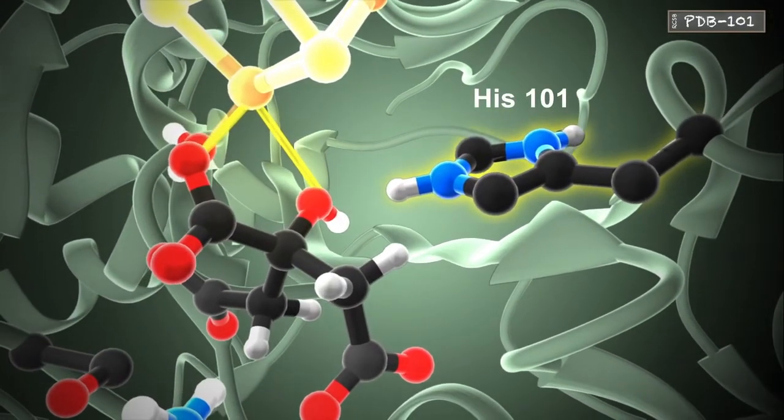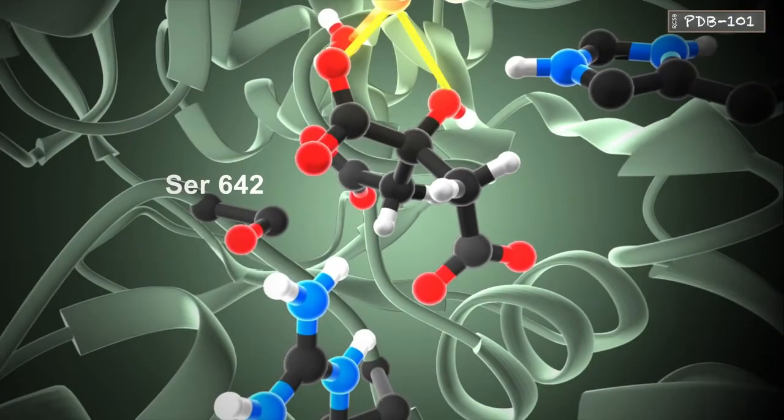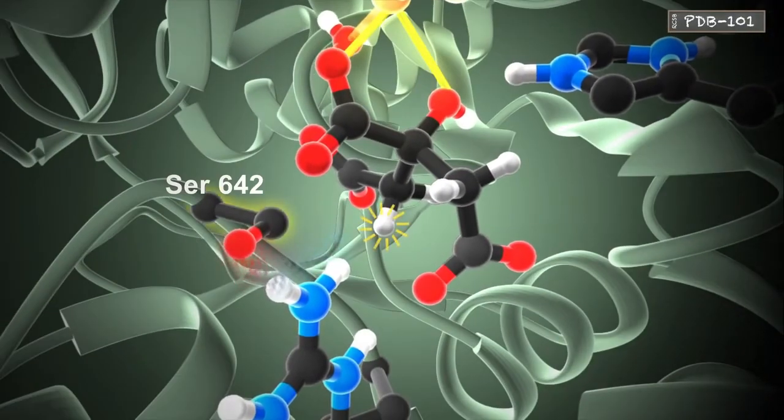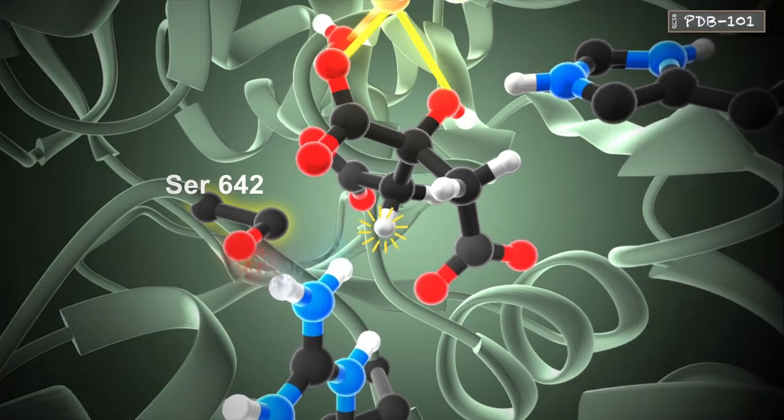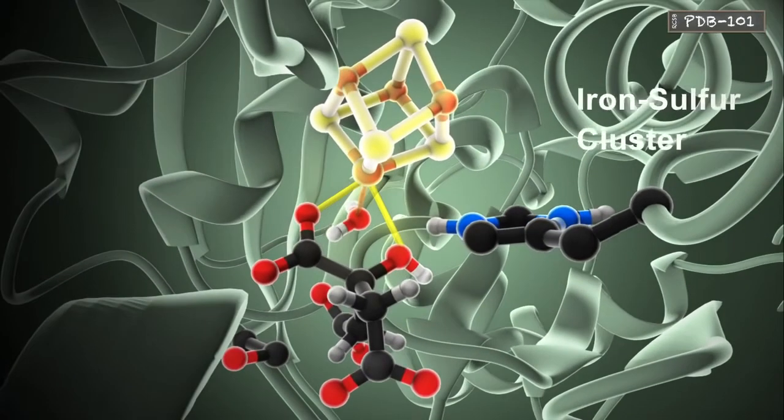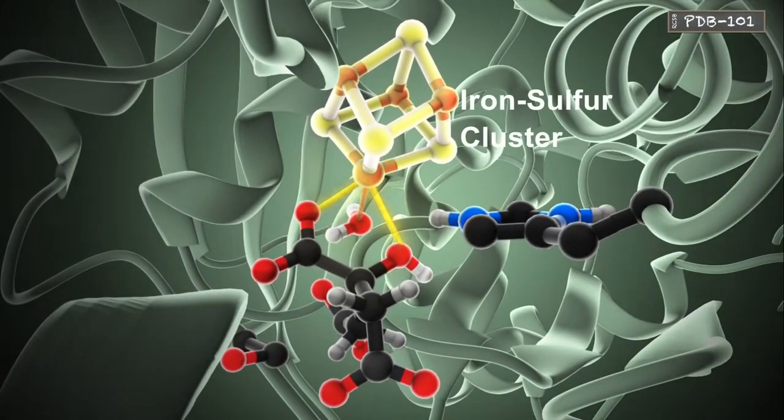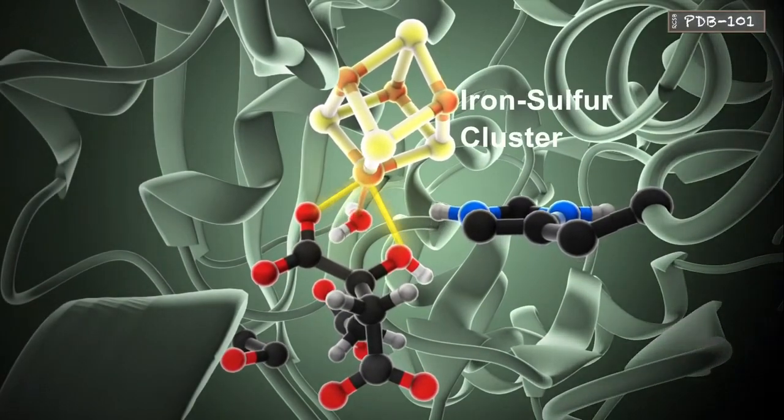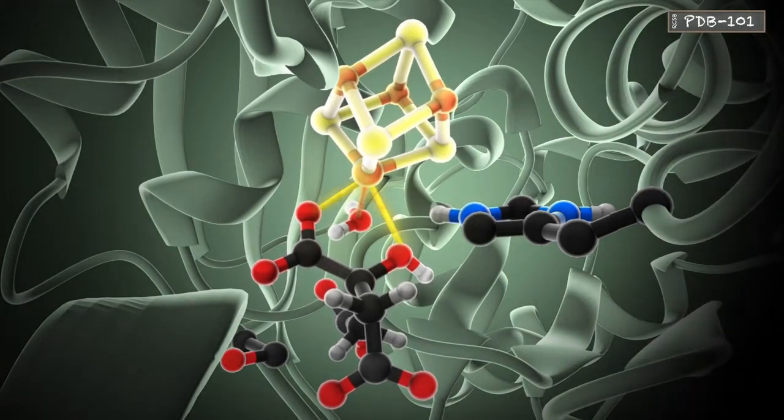Histidine-101 acts as an acid by donating its proton. Thanks to the chemical environment of serine-642, it can act as a base by accepting the proton from the substrate. The active site of aconitase also contains an iron-sulfur cluster that stabilizes the substrate electrostatically and helps to position it relative to the catalytic residues.